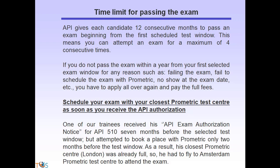API gives each candidate 12 consecutive months to pass an exam, beginning from the first scheduled test window — meaning you can attempt an exam a maximum of four consecutive times. If you do not pass within a year from your first scheduled exam window for any reason, you have to apply all over again and pay the full fees. Book your closest Prometric test center as soon as you receive the API authorization. One trainee received authorization for API 570 seven months before the selected window but only tried to book two months prior — his closest center in London was full and he had to fly to Amsterdam.